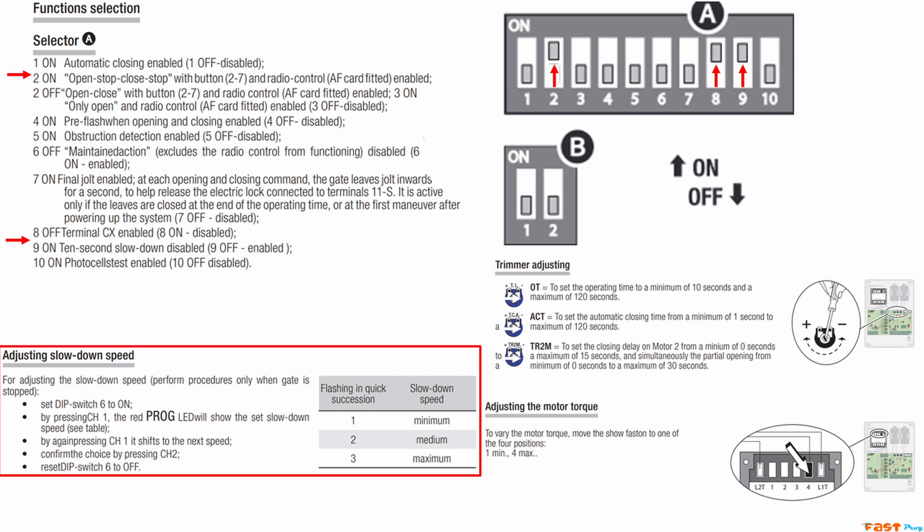Just so you know, when activated, the slowdown will kick in during the last 10 seconds of the operating time, which you can adjust using the TL potentiometer, we've set to about 30 seconds.